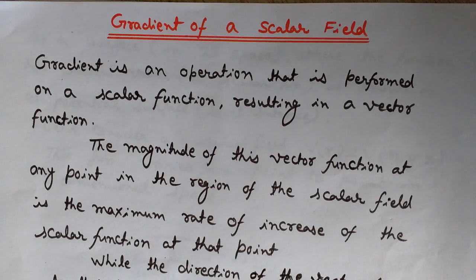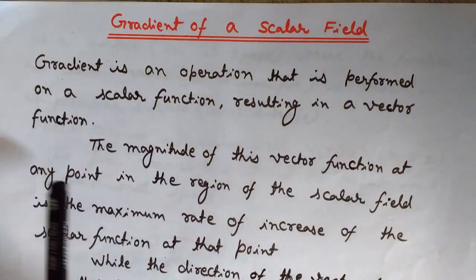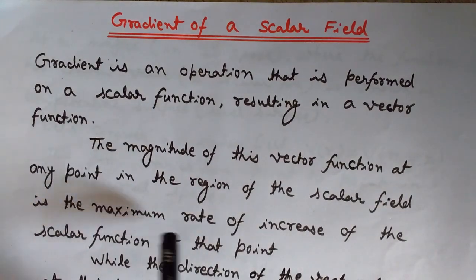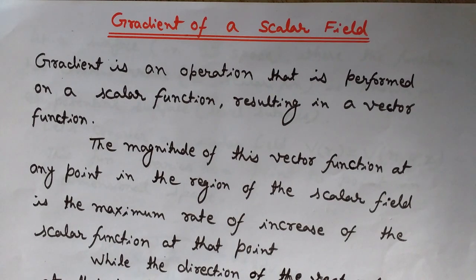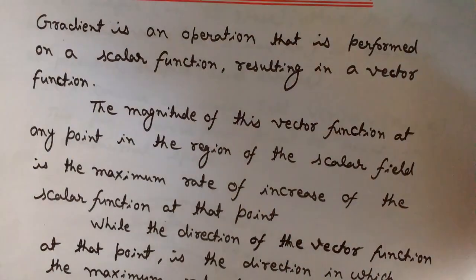If we move slantwise ten kilometers, the rate of change of temperature would not be maximum — it would be smaller. So what is the gradient? The gradient is defined such that its magnitude at any point in the region of the scalar field is the maximum rate of increase of the scalar function at that point. Gradient is a vector function that operates on a scalar field; the output is a vector field, and its direction shows the direction of fastest rate of change.